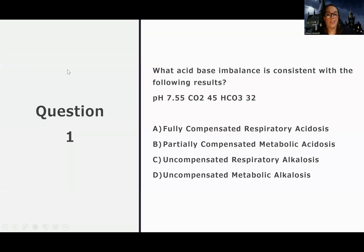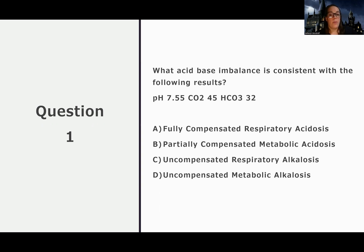So the first type of question we could ask you is just a simple knowledge question — it's pretty much just asking what acid base imbalance is this? In order to figure this out, all you have to know is how to interpret an ABG. I'm going to just show you real quick how I would solve this problem. So we're looking here first at the pH. The pH is high, and I use the ROME method — you can use whatever method works best for you. So with a high pH, I already know that I'm dealing with a state of alkalosis, so I can already cross out A and B because I'm in a state of alkalosis, not acidosis.